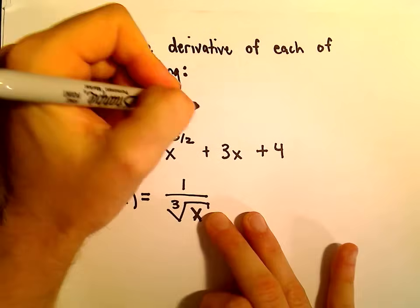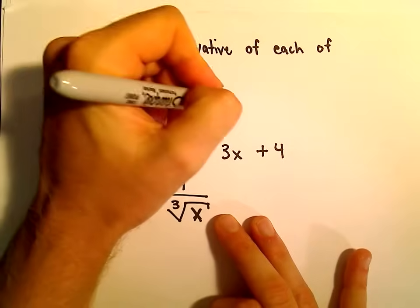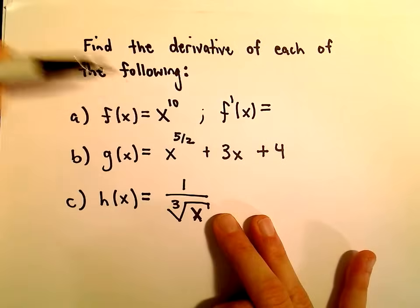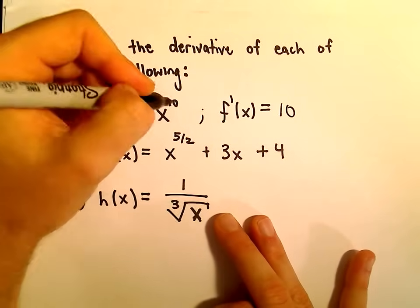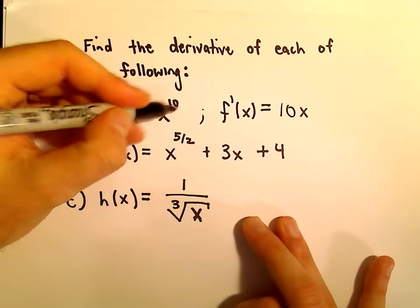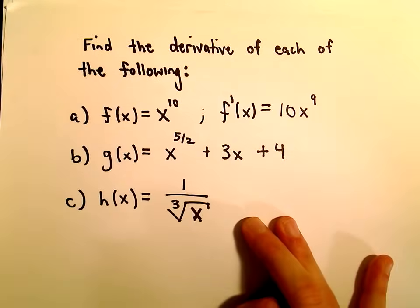So the first one's quite easy. We've got f of x equals x to the 10th. So the derivative rule says that whenever you have a variable to a power, we just pull that number out front, so the 10's going to come right out front, and then we simply subtract 1 from our exponent, so we would have 10 minus 1, or 9, and that's our derivative.